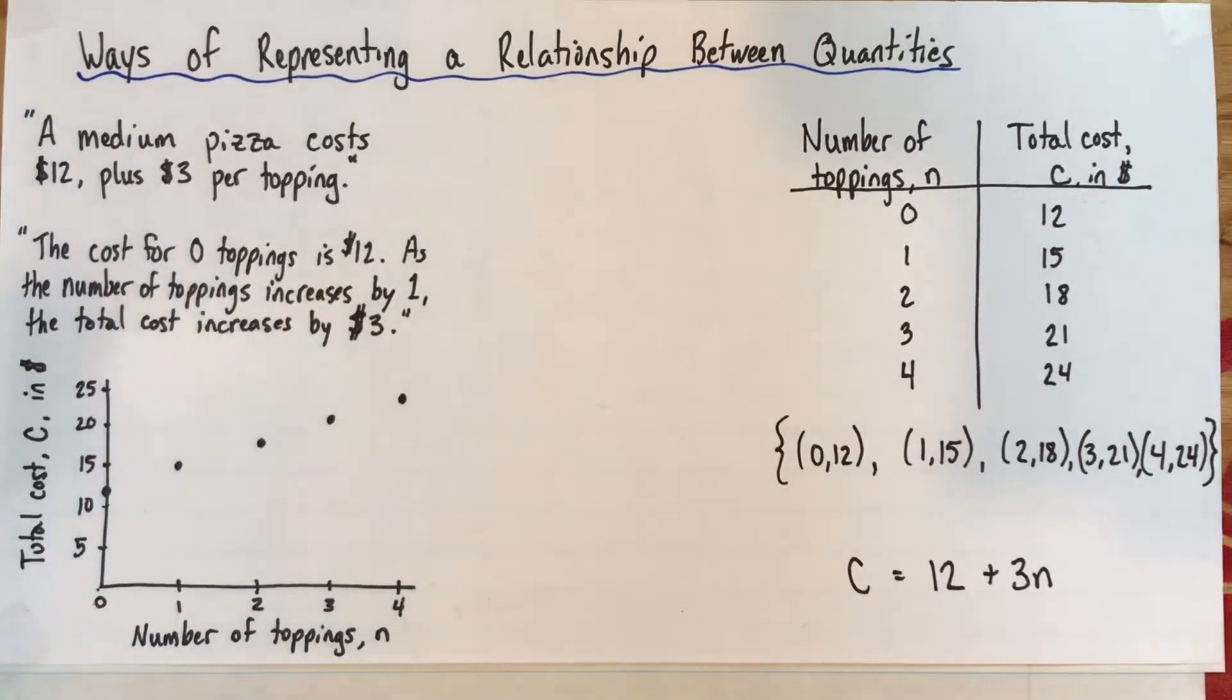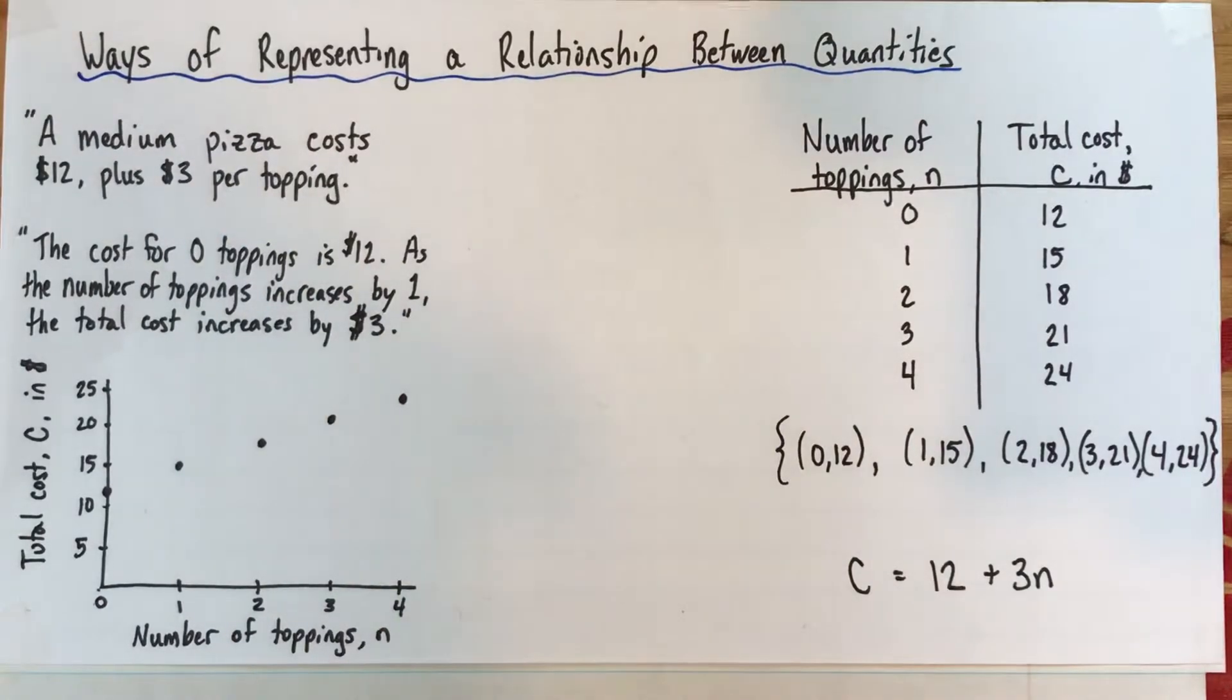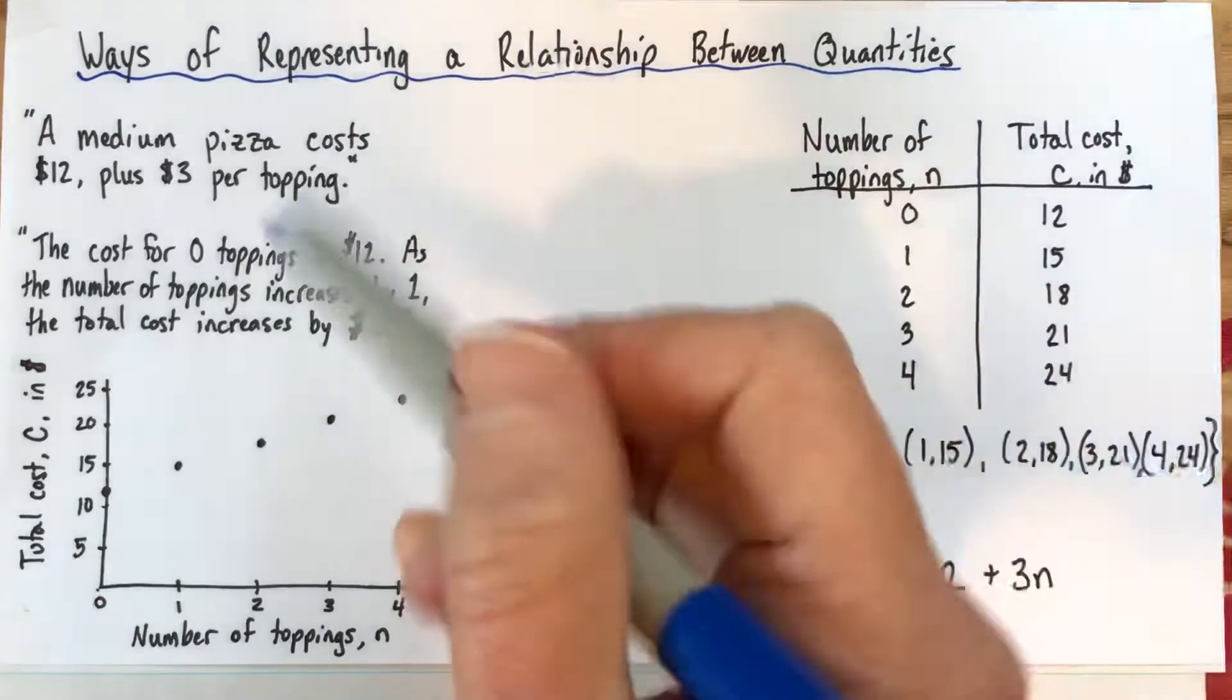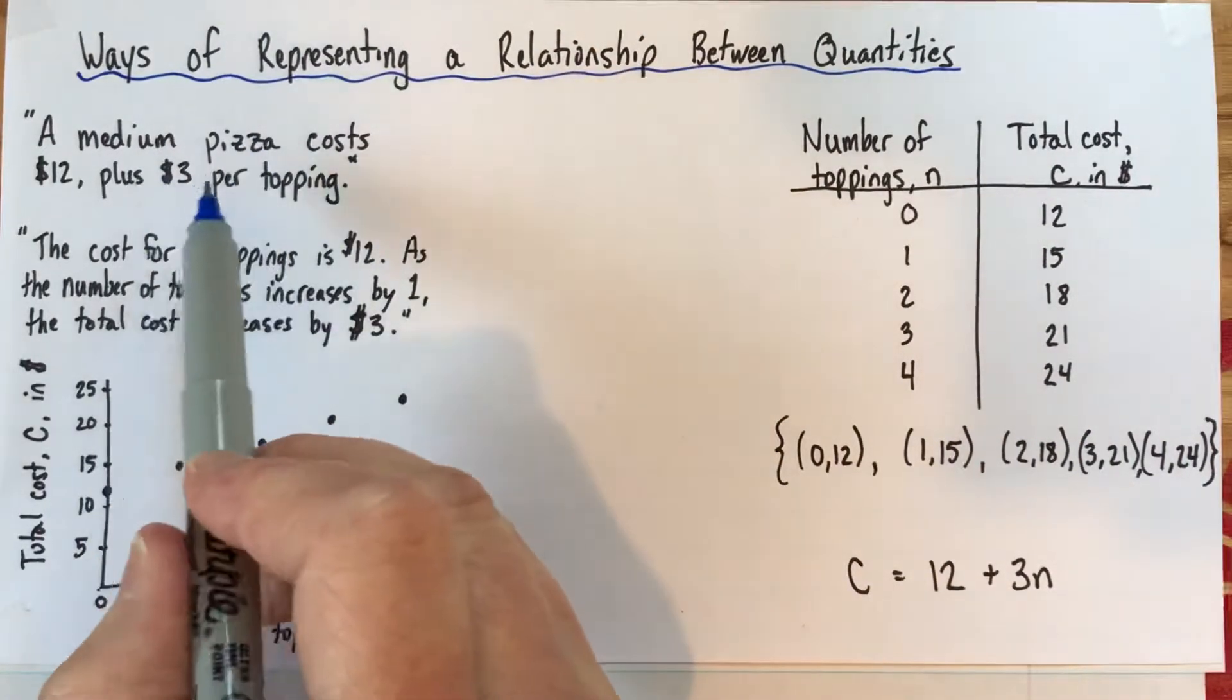So what I've done is I've written out some ways in advance here and we'll go through and kind of just name each one. So all of these are ways of representing the same relationship and it's a relationship between the number of toppings you get on your pizza and how much the pizza costs. So here's the first way. It's pretty simple, it's just a sentence.